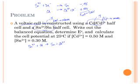And my overall equation is tin 2+ plus cadmium gives me tin metal plus cadmium 2+ ions. Notice that the electrons do cancel out in my net ionic equation. And I ask, what is the cell potential at 25 degrees if the cadmium ion concentration is 0.5 molar initially, and the tin 2+ concentration is 0.3 molar.